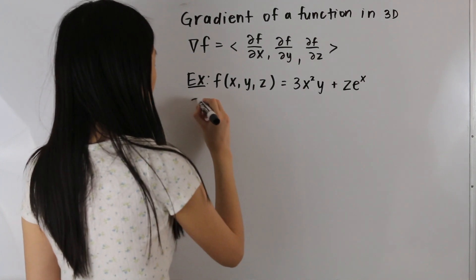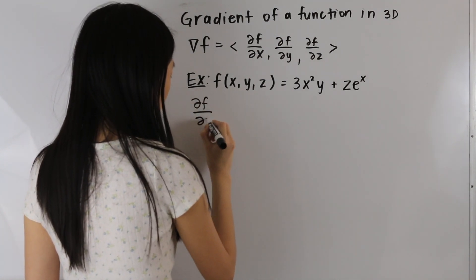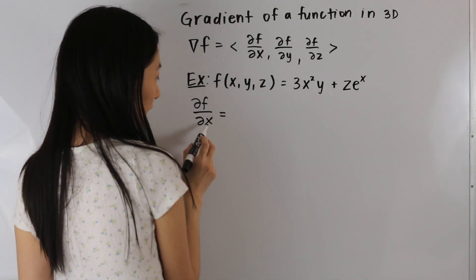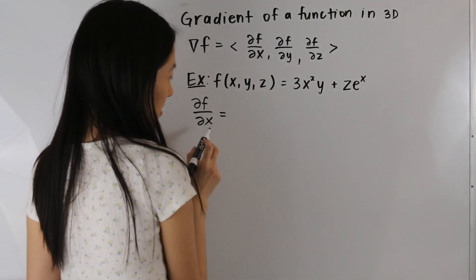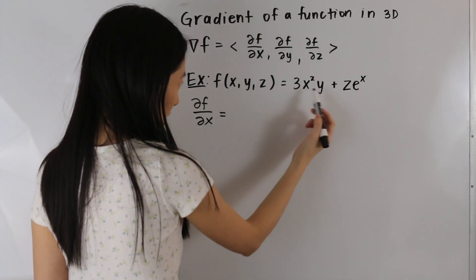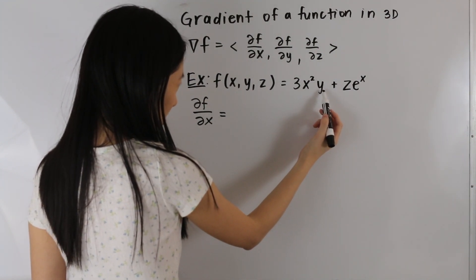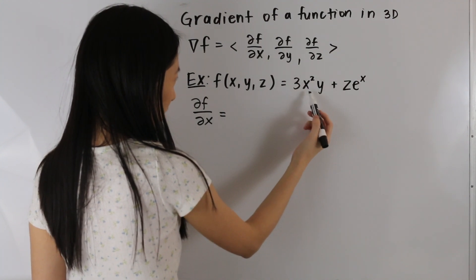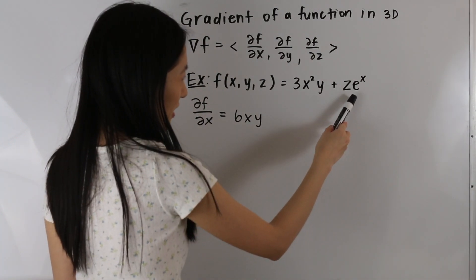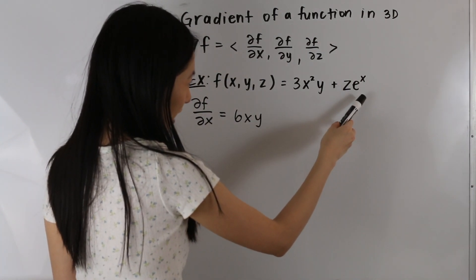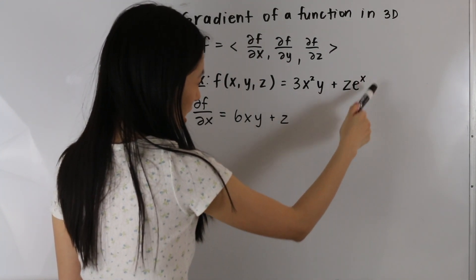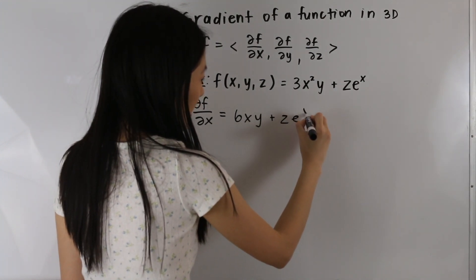First, let's go ahead and take the partial derivative of f with respect to x. In this case we are taking the derivative with respect to x and holding y and z constant. This 3 is a constant and y is also a constant, so we're just taking the derivative of the x squared term, which gives us 6xy. Now for the term z e to the x — z is just a constant, and we're taking the derivative of e to the x — so we get z e to the x.